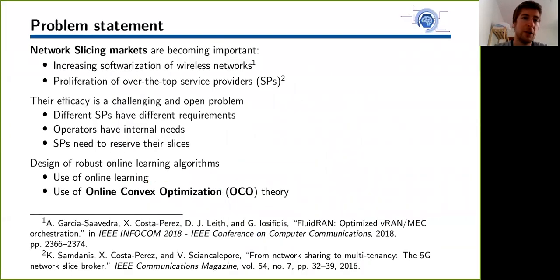Network slicing markets are becoming important due to the increasing softwarization of wireless networks and the proliferation of over-the-top service providers. Their efficacy is a challenging and open problem as different service providers may have different requirements in terms of latency or reliability, and operators have internal needs. Service providers need to reserve their slices in such a way that it does not incur unbearable costs of reservation and at the same time enables them to address their demand.